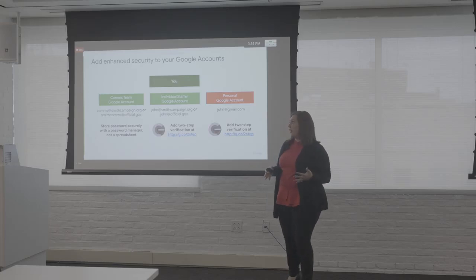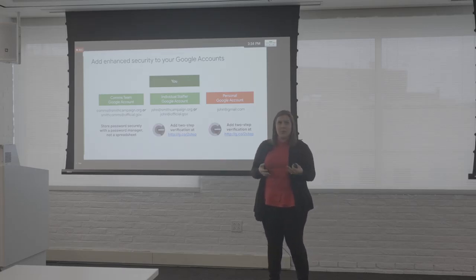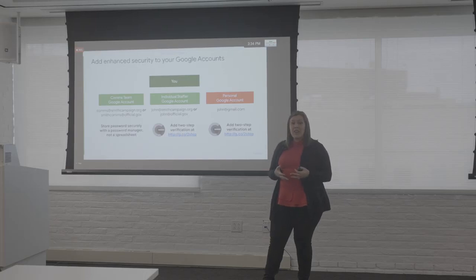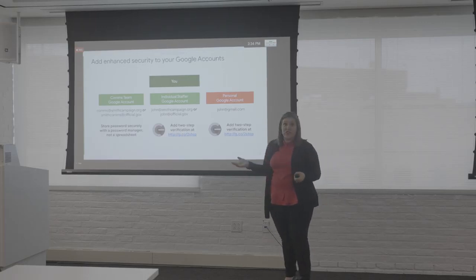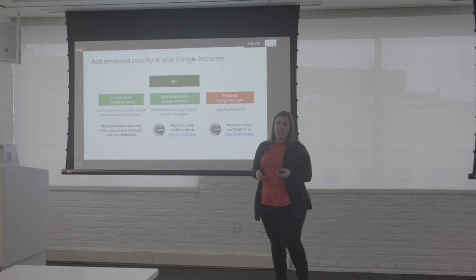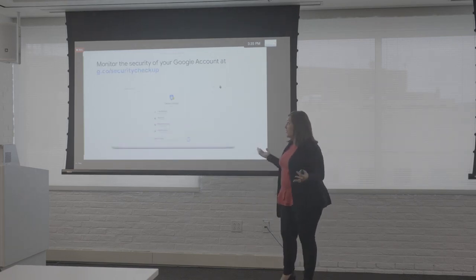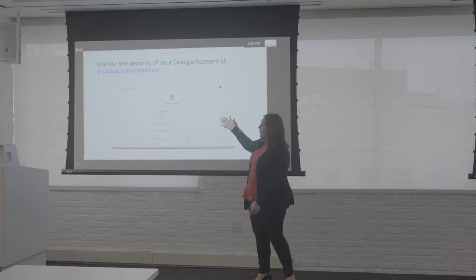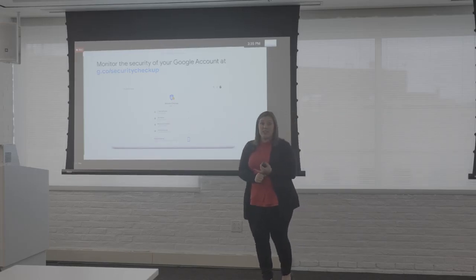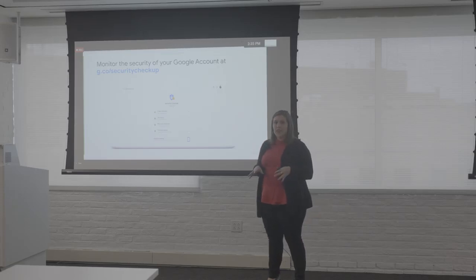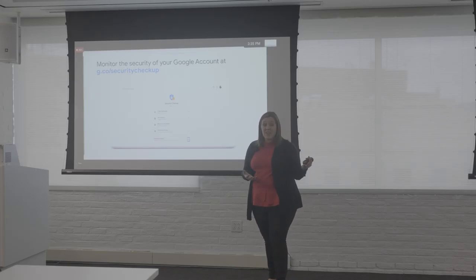To secure those Google accounts, make sure at the office level you're storing passwords securely with a password manager — not just a spreadsheet. Use something like OnePass. On individual accounts, make sure you're using two-step verification to protect against nefarious actors. To do a security checkup, log into your account, hit Manage Account, and it'll take you to your security checkup where you can see if two-step verification is enabled, how many devices you're logged into, and recent security events.